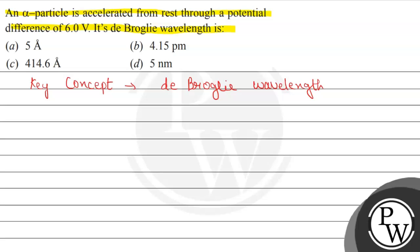Due to this wave nature, it has a De Broglie wavelength. The formula given by De Broglie was λ = h/mv, where h is Planck's constant, m represents the mass of the particle, and v represents the velocity of the particle.